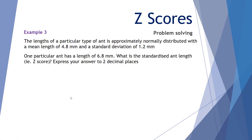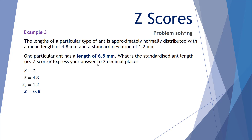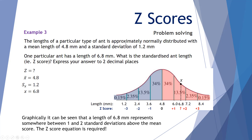Example 3. The lengths of a particular type of ant are approximately normally distributed, with a mean length of 4.8 millimetres and a standard deviation of 1.2 millimetres. One particular ant has a length of 6.8 millimetres — what is the standardised ant length, expressed to two decimal places? On the distribution curve, 6.8 is somewhere between plus one and plus two standard deviations, so it'll be a z-score of plus one-point-something. The graphical comparison doesn't provide a precise answer, so we'll use the equation.